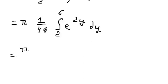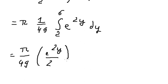So this one we have π over 49. The integration of this one, we have e to the power of 2y over 2. And we put the bounds from 2 to 6.